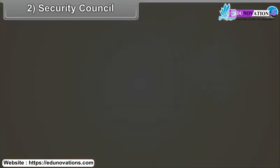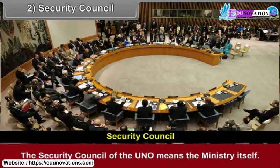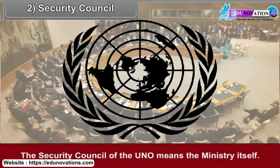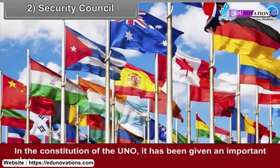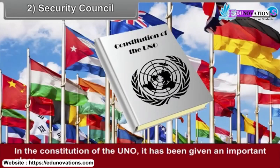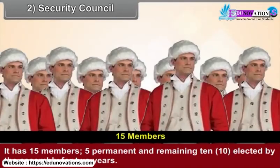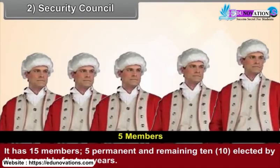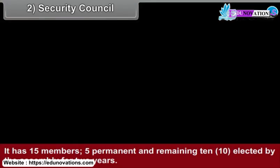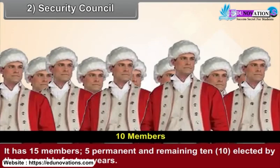The Security Council of the UNO means the Ministry itself. In the Constitution of the UNO, it has been given an important place. It has 15 members — 5 permanent, and the remaining 10 elected by the Assembly for two years.